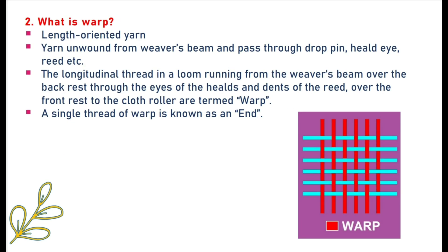Second question: what is warp? Warp is the length-oriented yarn. Yarn unwound from the weaver's beam and passed through the drop-in, heeled eye, reed, etc. The longitudinal threads in a loom running from the weaver's beam over the backrest, through the eyes of the heels and dents of the reed, over the frontrest to the cloth ruler, are termed warp.